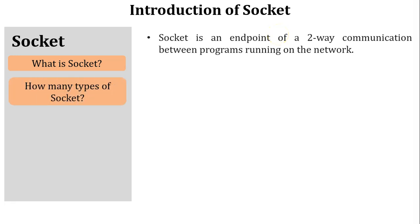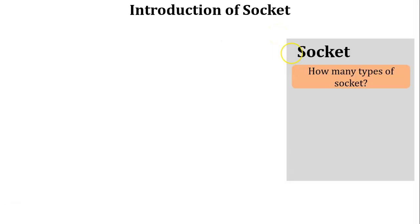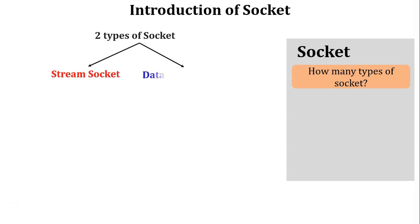Next, how many types of sockets are there? There are two types of sockets: the first one is stream socket and the other one is datagram socket.